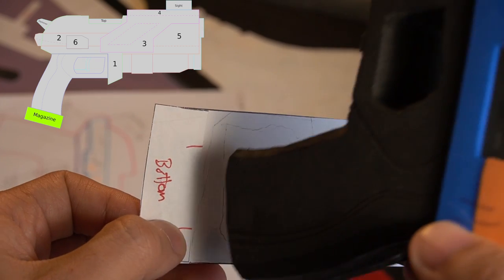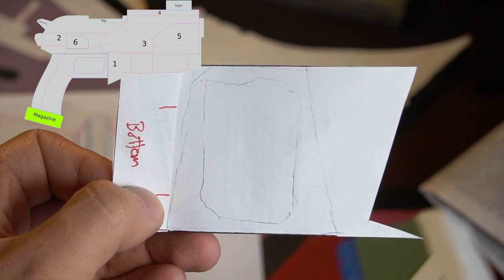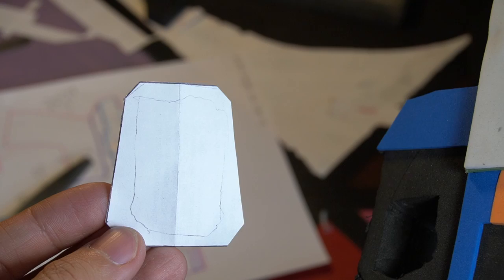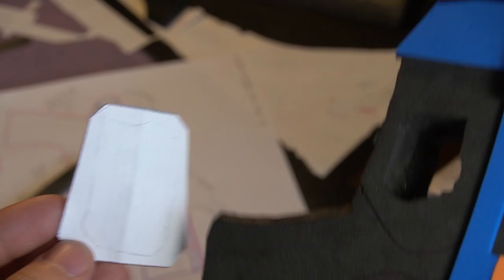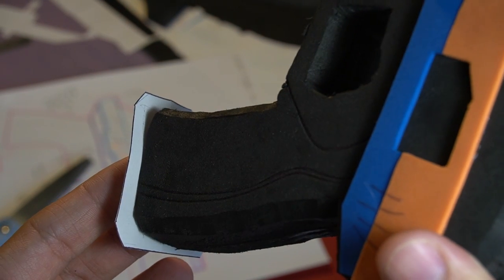For the magazine, I traced the bottom of the handle onto paper, and then I used this section of the template just to figure out part of the dimensions. Then I drew a trapezoid around what I traced, and then trimmed off the edges to get this template here. Then I just traced that onto foam and cut it out.